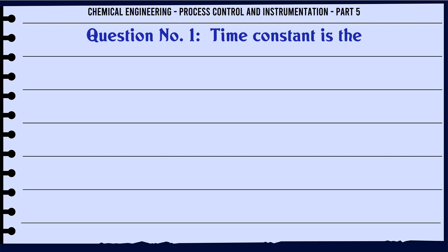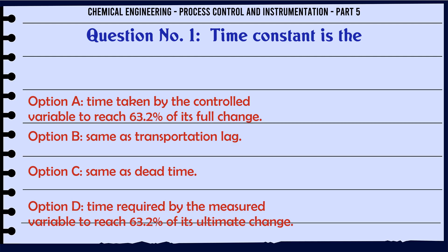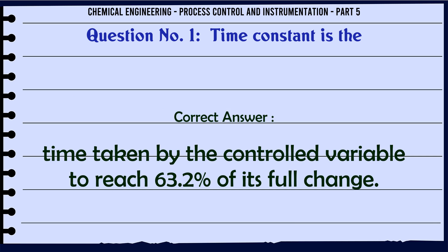Time constant is the: A. Time taken by the controlled variable to reach 63.2% of its full change. B. Same as transportation lag. C. Same as dead time. D. Time required by the measured variable to reach 63.2% of its ultimate change. The correct answer is: Time taken by the controlled variable to reach 63.2% of its full change.